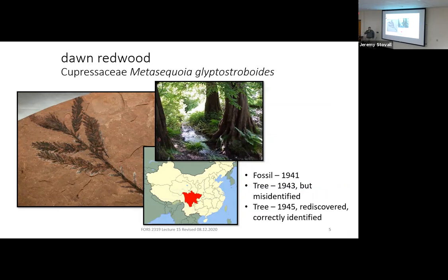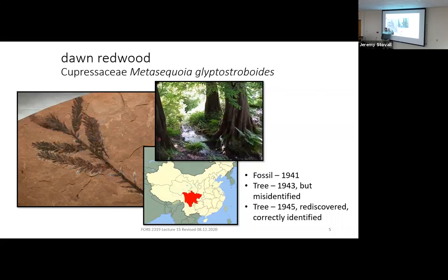Next is Dawn Redwood, Cupressaceae Metasequoia glyptostroboides. There are three real sequoias in the world — redwood and giant sequoia will be covered in a student presentation, and Metasequoia is the third, essentially the Chinese sequoia. It's not nearly as impressive as the two North American ones — not the tallest or the largest — but it has an interesting discovery story. In 1941, a fossil was identified as a brand new species, and then in 1943 a botanist in remote southwest China found living trees growing along a creek.